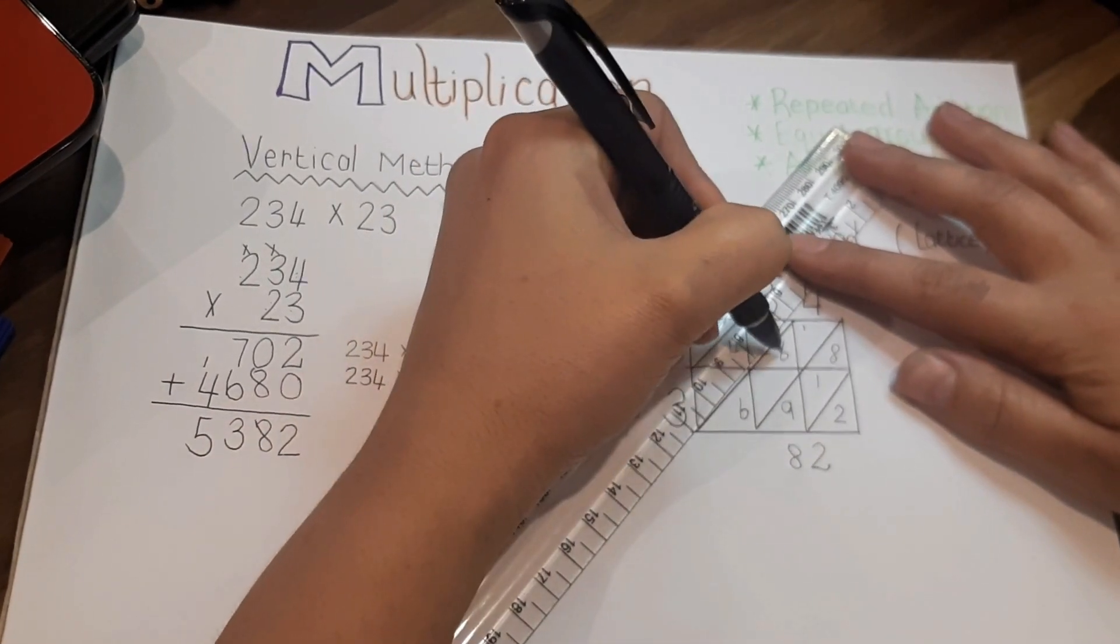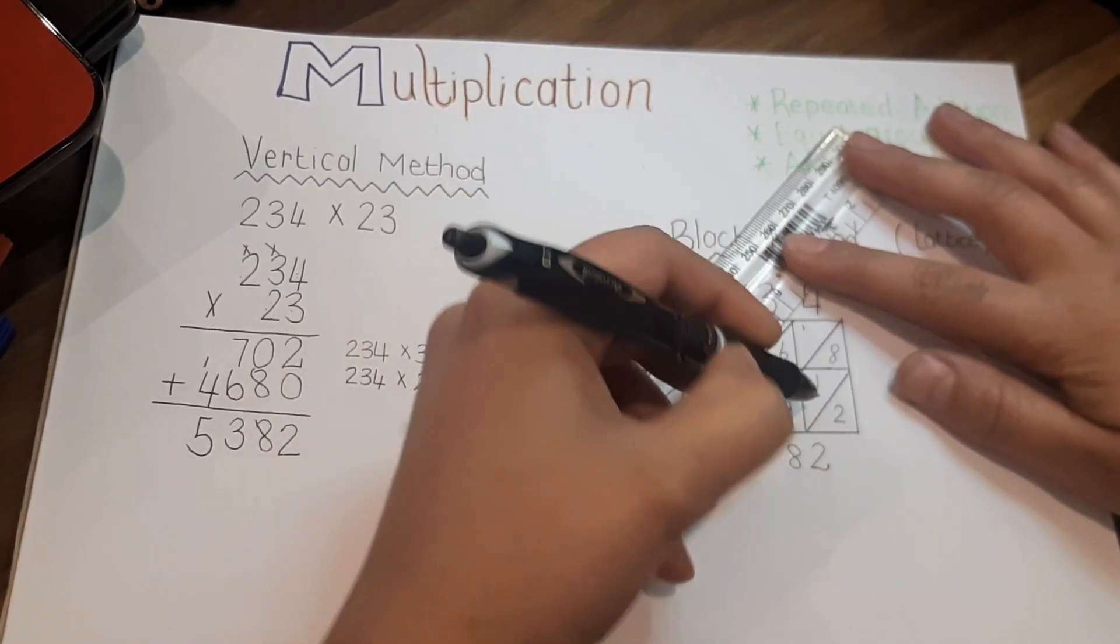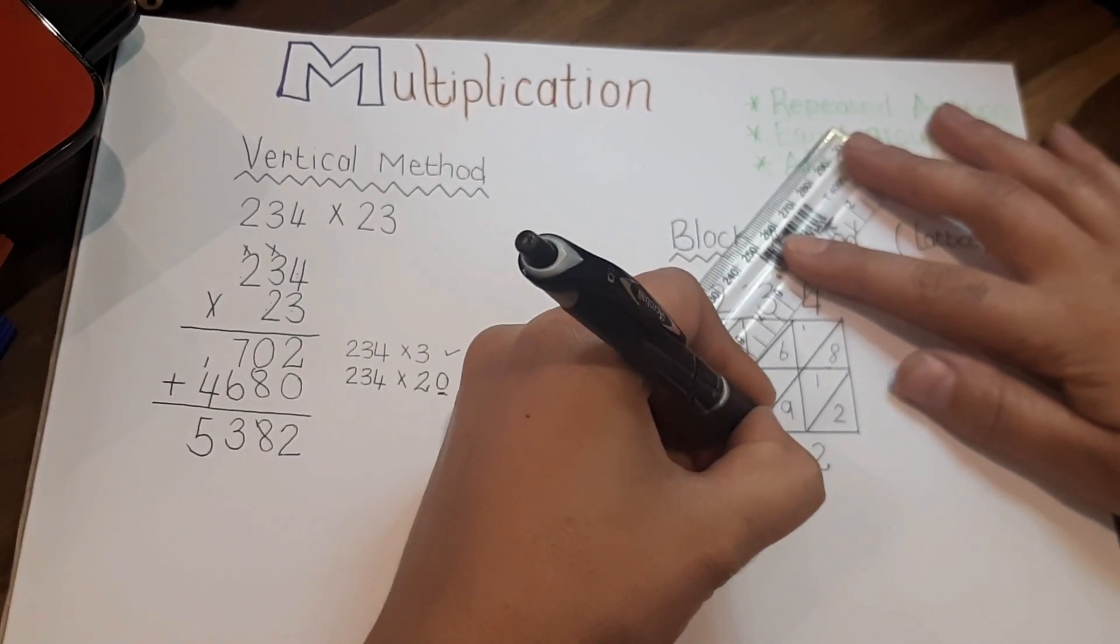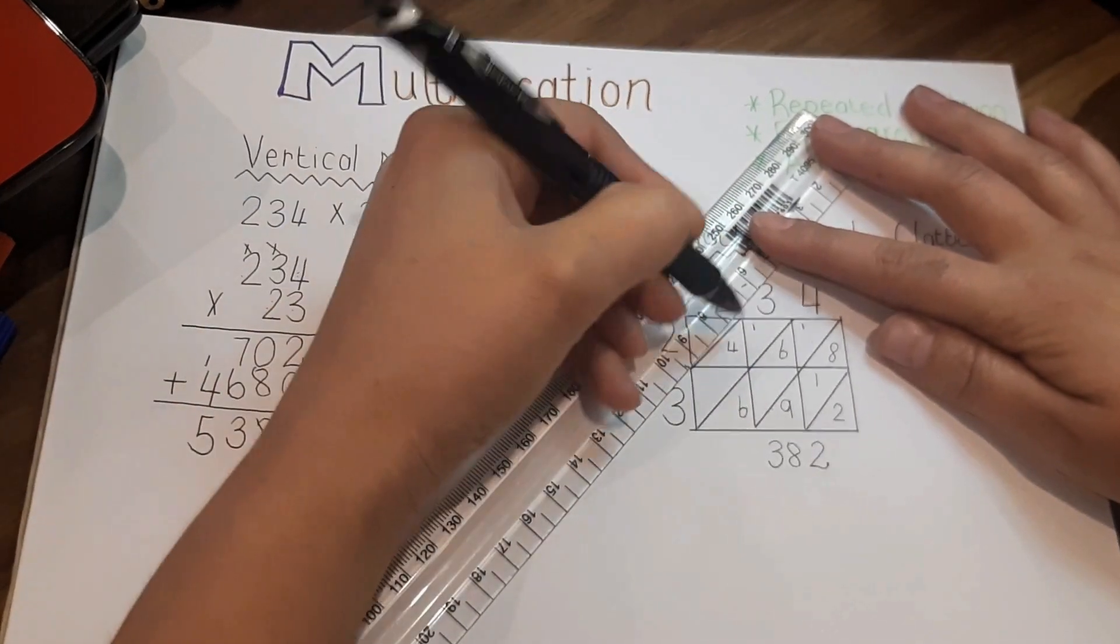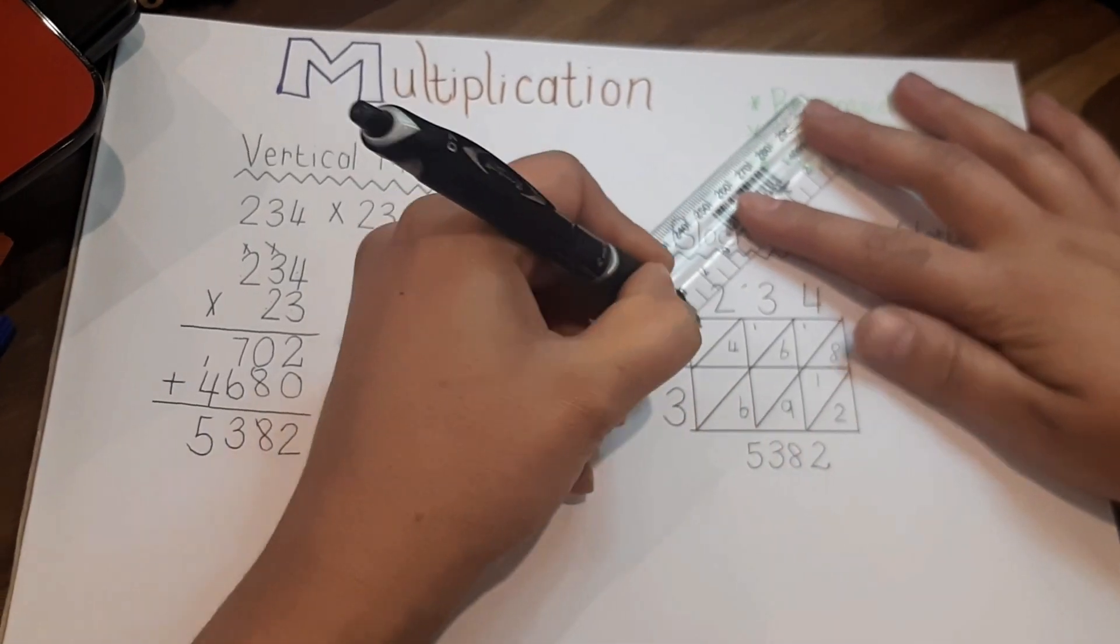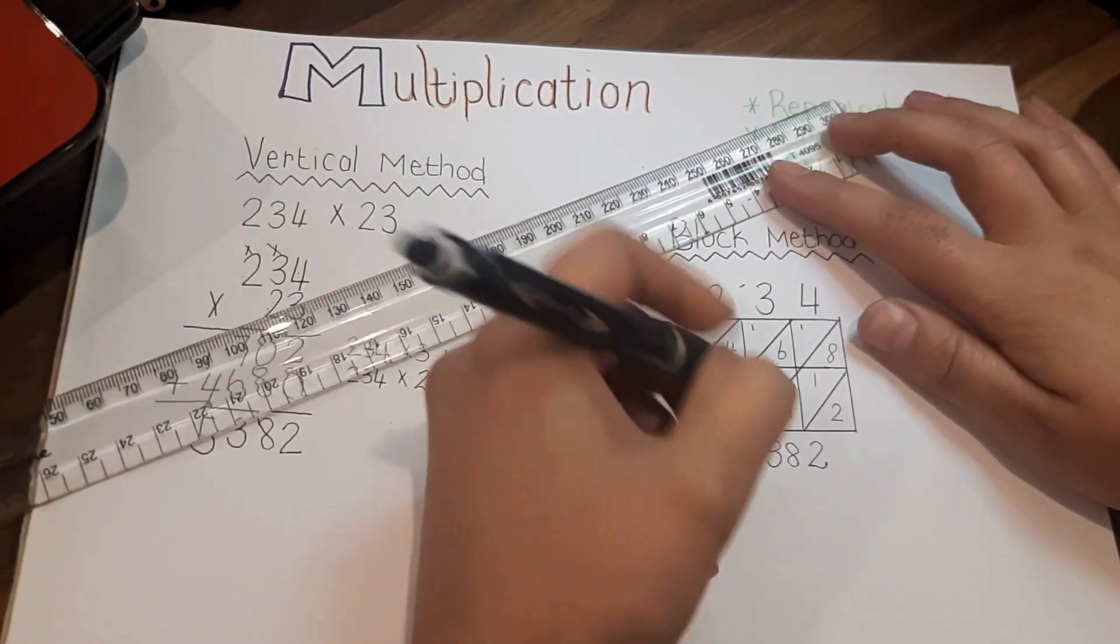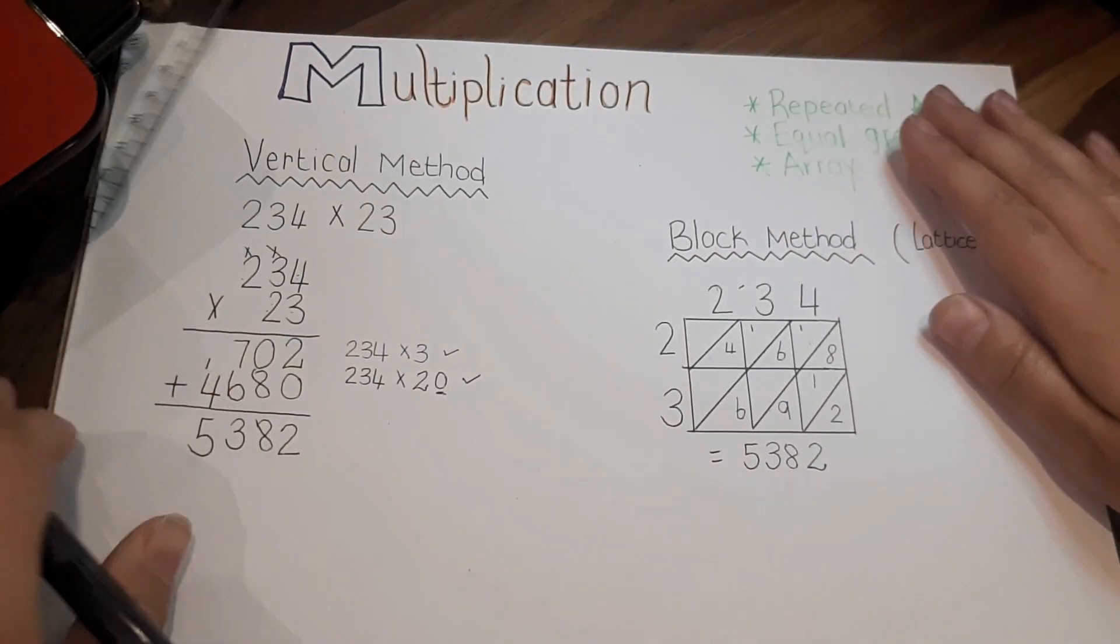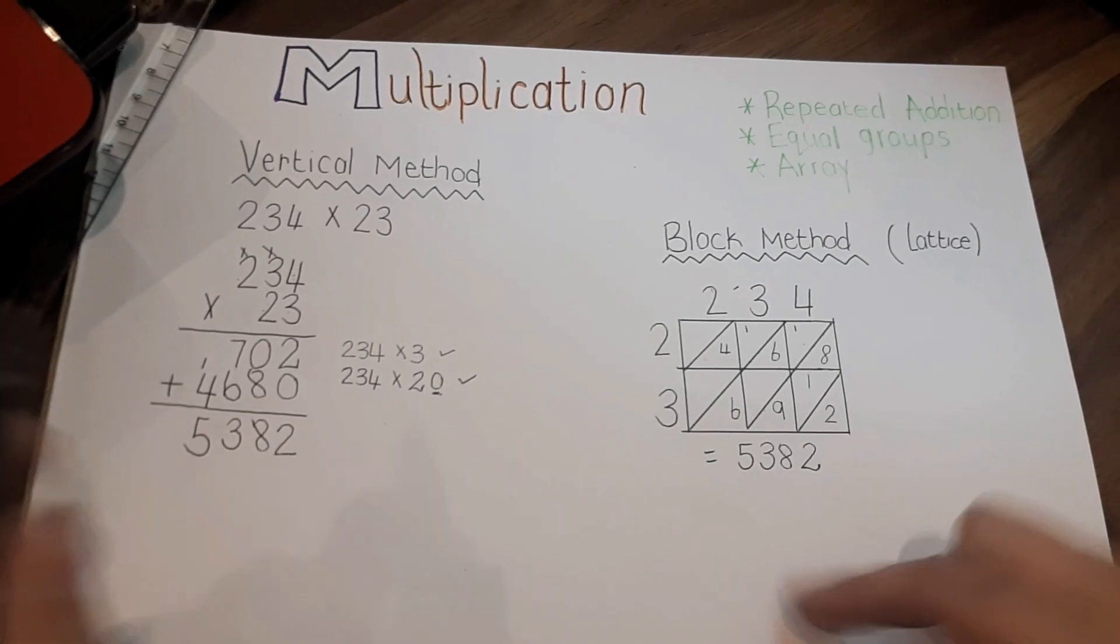6 plus 6 is 12 plus 1 is 13. Write the 3, carry over the 1. 4 plus 1 is 5, and there's nothing in the top block. And there you have your answer, exactly the same, different two methods.